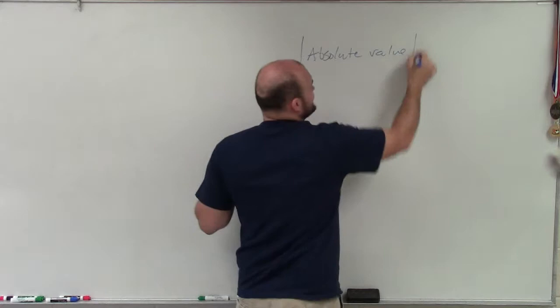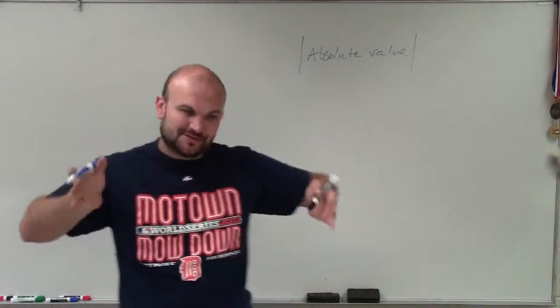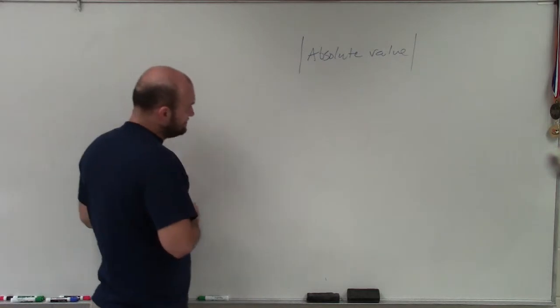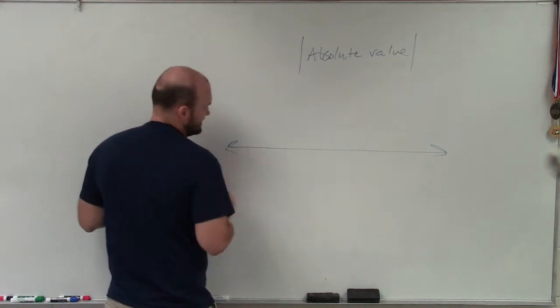Well, absolute value is these two straight little bars that kind of look like brackets or parentheses, but they're just going to be straight down. So basically what we're doing when we're talking about absolute value is kind of like absolute distance.